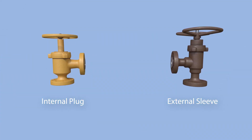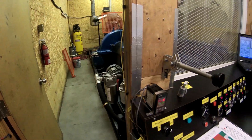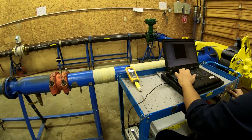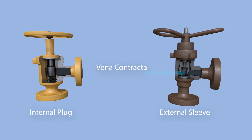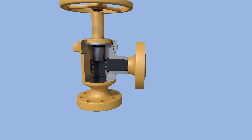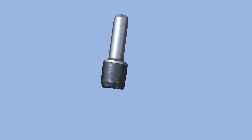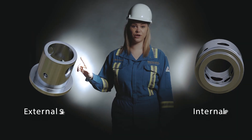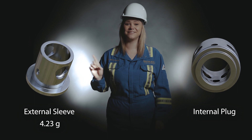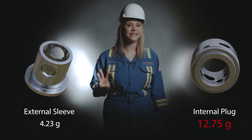Let's compare erosion in the last two choke valves. MasterFlow tested the effects of erosion at their state-of-the-art testing facility by placing two valves in a series, subjecting both to identical sand and flow rate conditions. As the fluid began to move towards the vena contracta, where the diameter of the stream is smallest, the fluid in the internal plug design accelerated in the cage port and directly impinged onto the exposed internal plug, resulting in extensive material loss. The seat integrity of the internal plug was lost within 30 minutes. The external sleeve's seat feature was outside of the cage, away from the high-velocity turbulent fluid zone, so it lasted throughout the 10-hour test. This valve's material loss was only 4.23 grams. In stark contrast, the internal plug design lost an astounding 12.75 grams — that's more than three times the material.